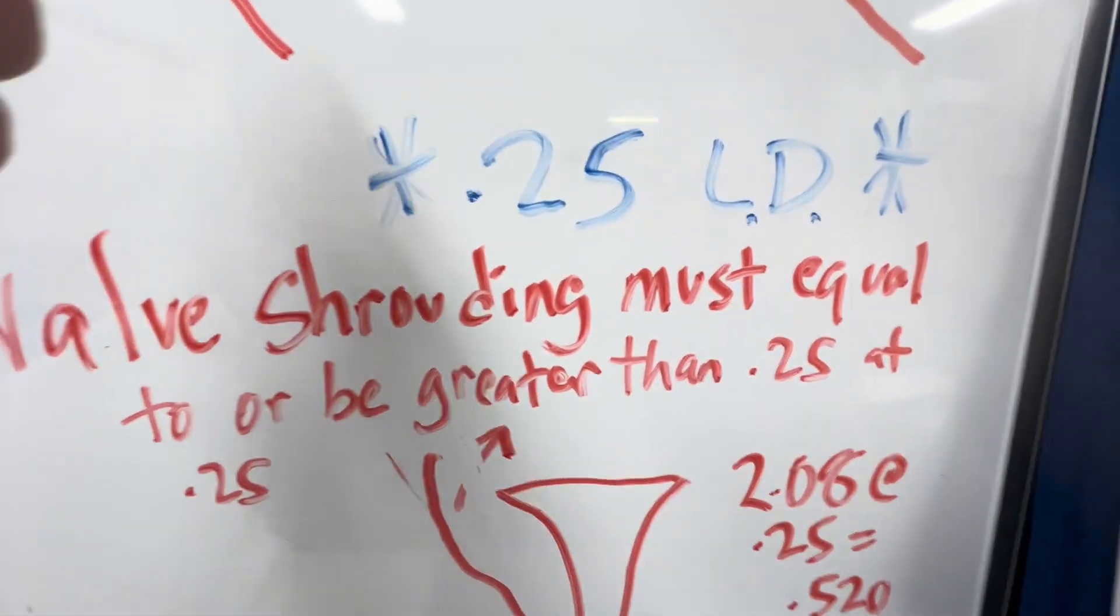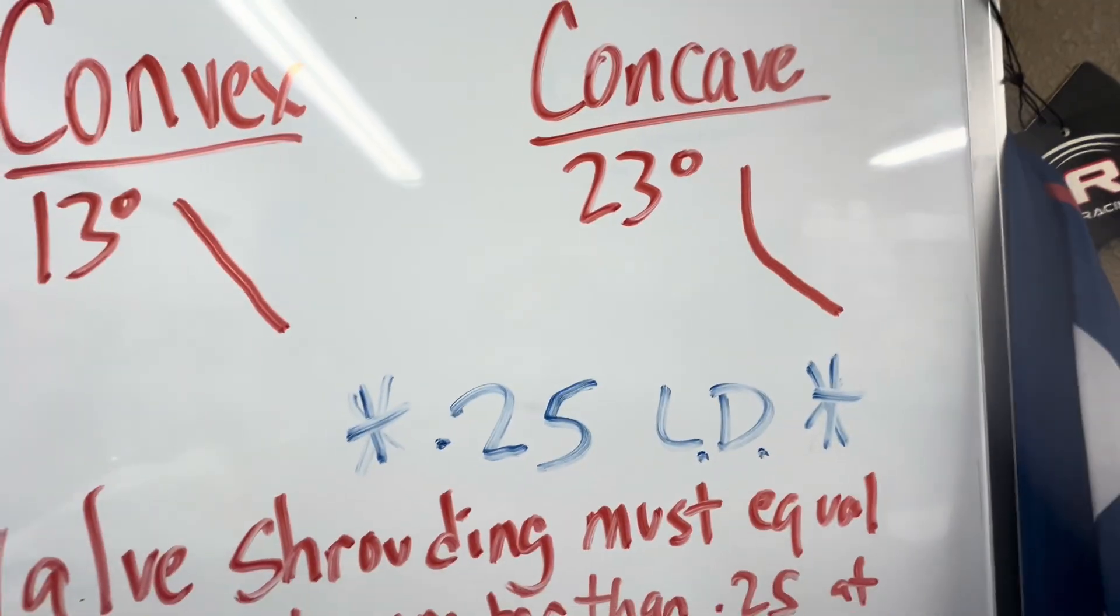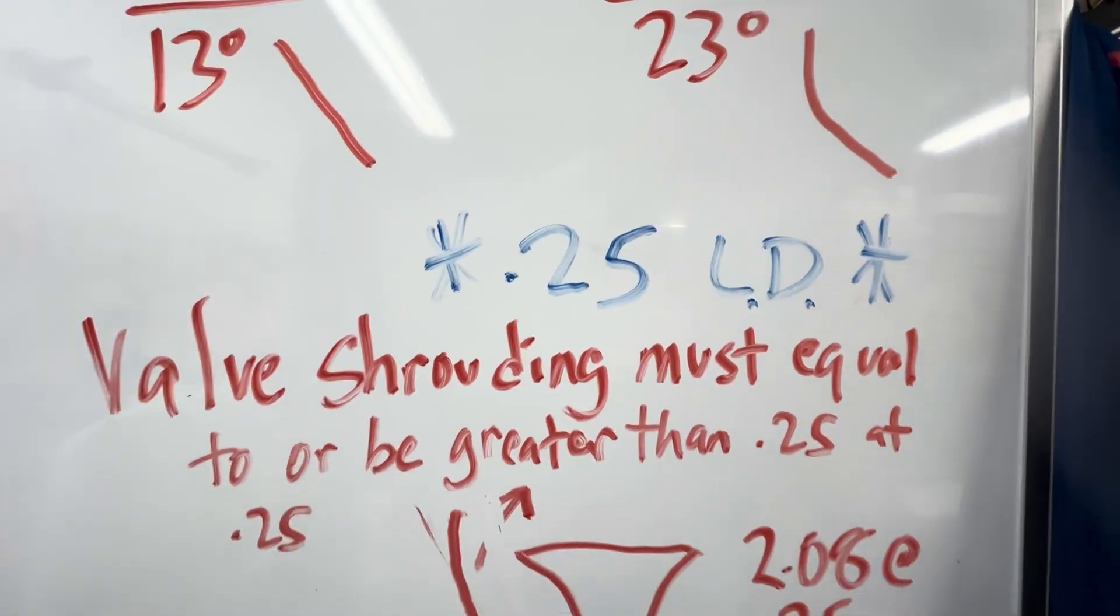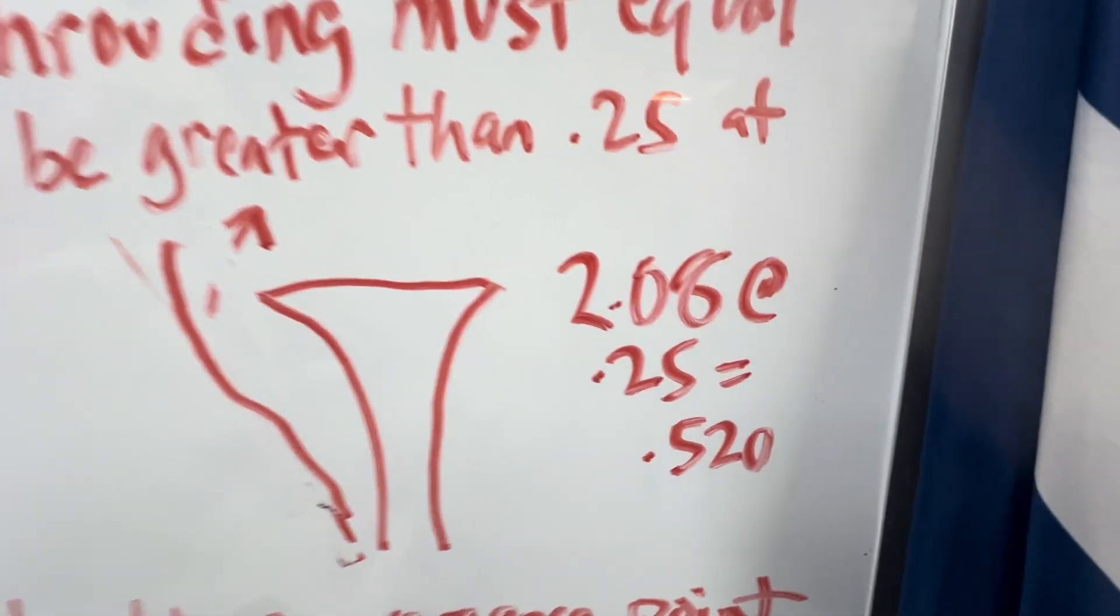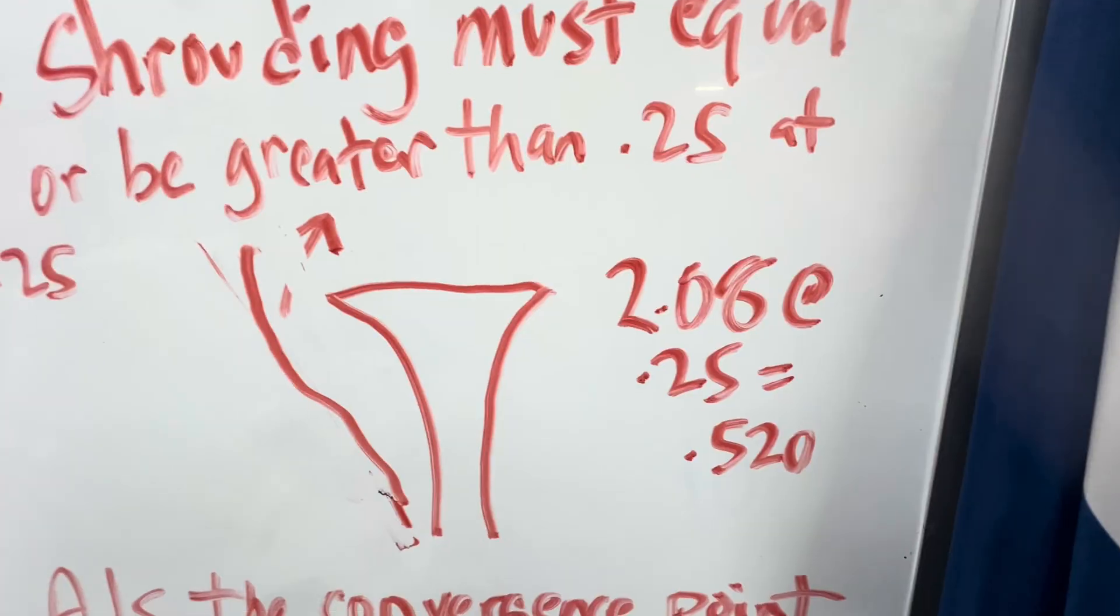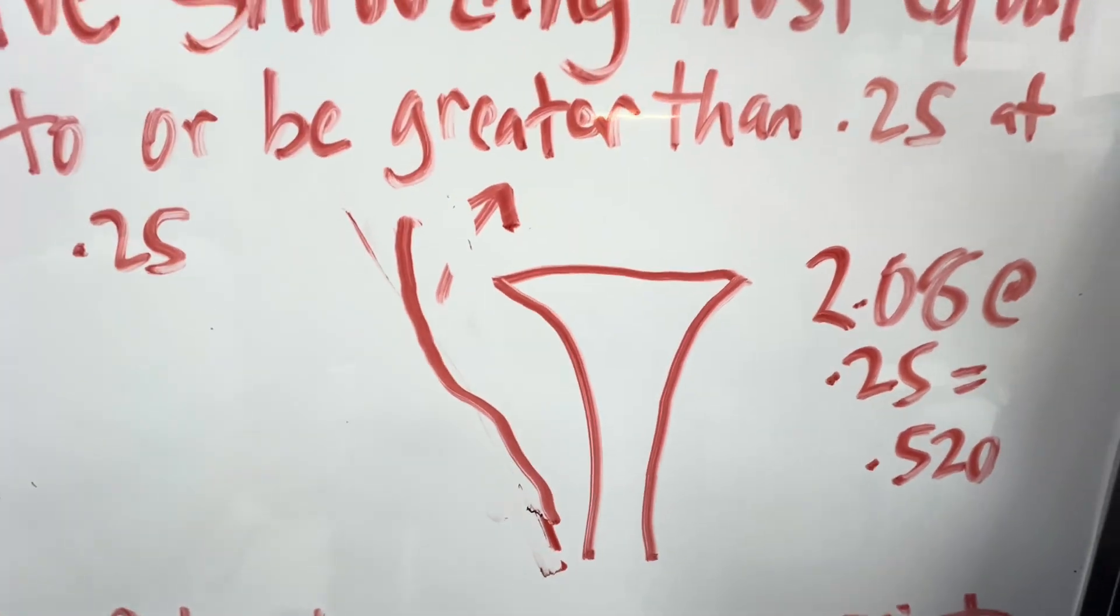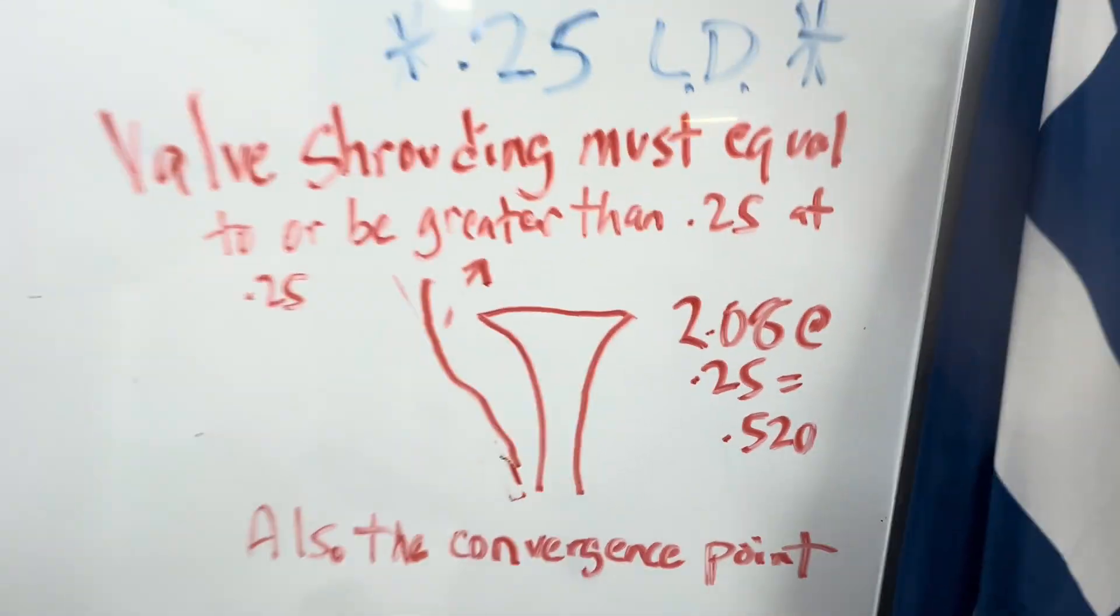Now, can you put a convex chamber in a concave type head? No, not really. Unless your 208 right there is a 172. Smaller valve doesn't need as much area, obviously. So, you got to worry about that as well.